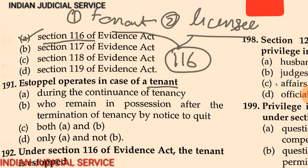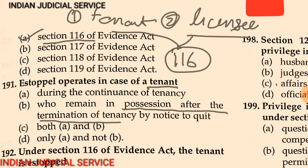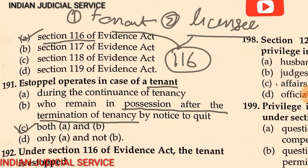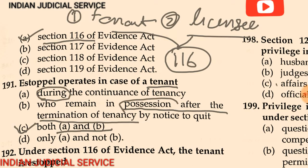Question 191: Estoppel operates in the case of a tenant — (A) during the continuance of tenancy and who remains in possession, (B) after the termination of tenancy by notice to quit, (C) both A and B, (D) only A, not B. The answer is option C: both A and B — meaning during the tenancy and also after termination of tenancy.